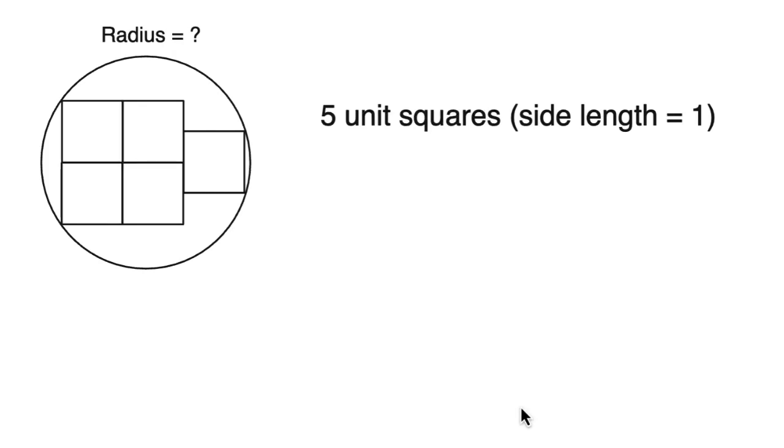In this problem we have five unit squares. That means each of their side lengths is one, and this fifth square on the right is exactly halfway down the other two squares. So the distance marked here is one half, and we want to know what is the radius of the circle.